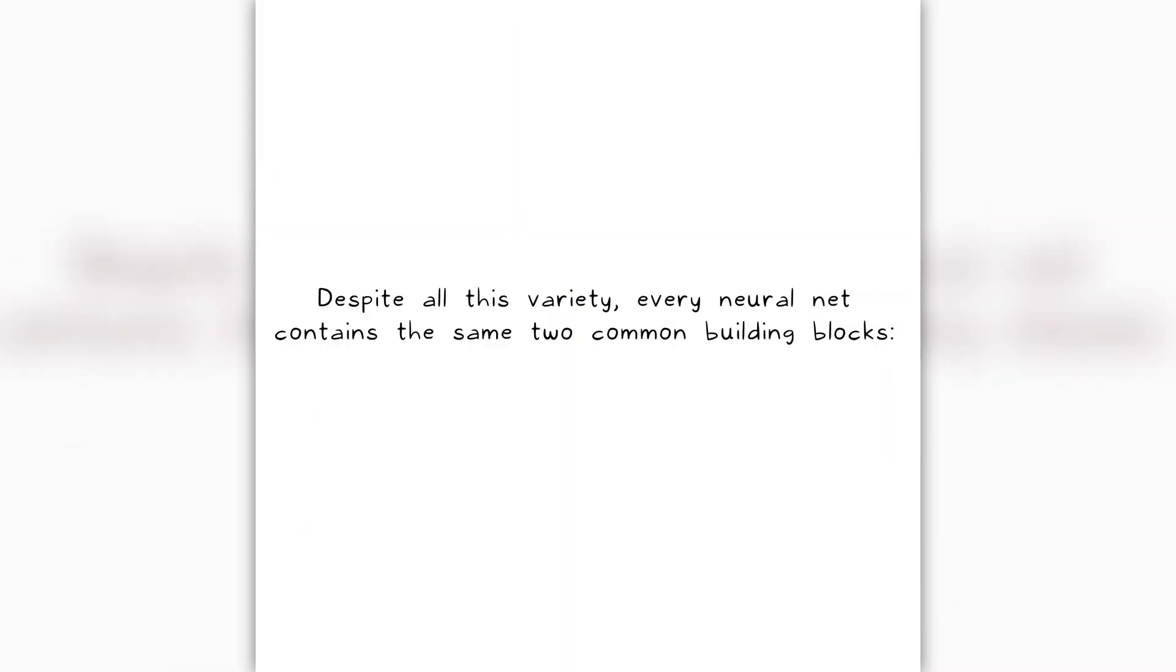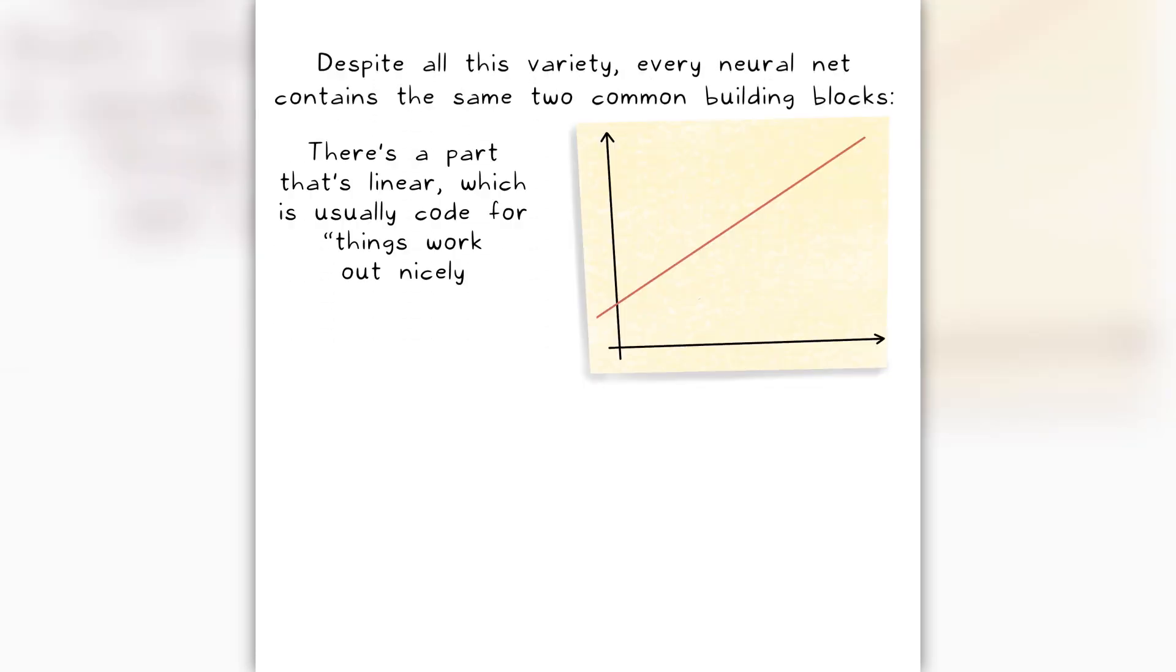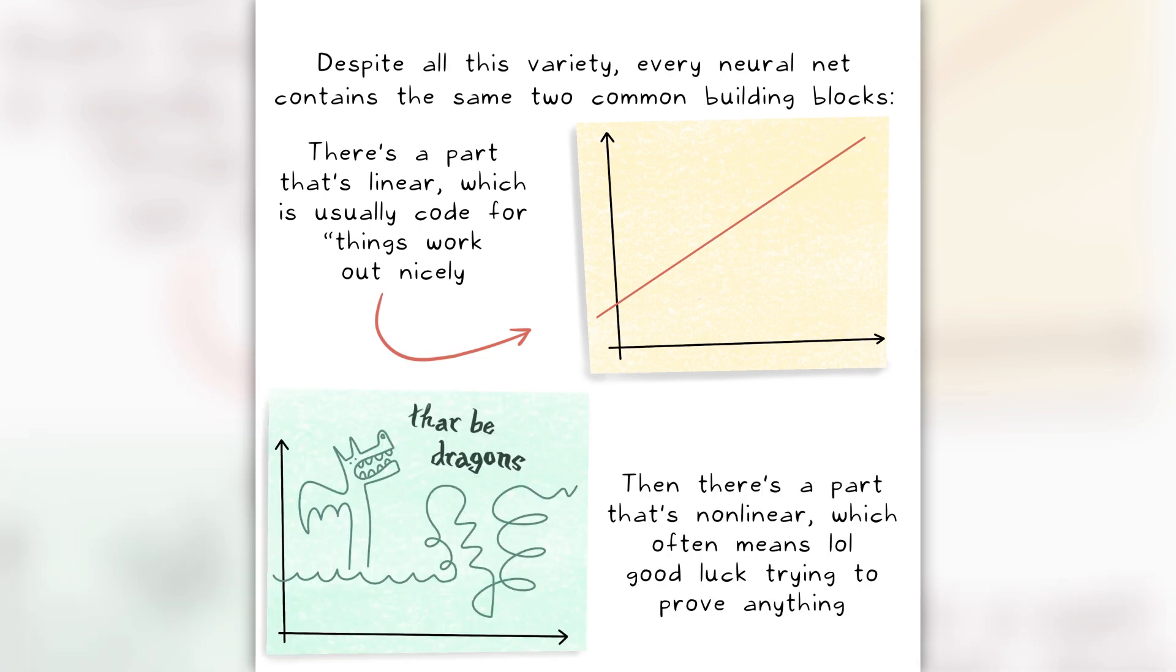Despite all this variety, every neural net contains the same two common building blocks. There's a part that's linear, which is usually code for things work out nicely. Then there's a part that's non-linear, which often means good luck trying to prove anything.